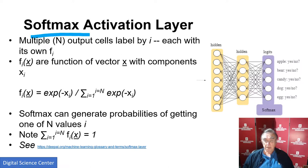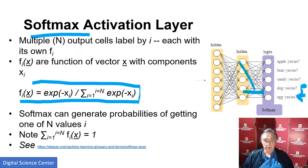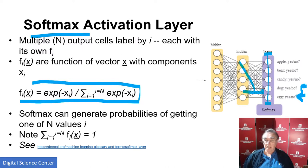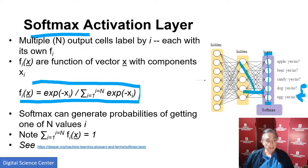Here we're trying to classify things — apple, bear, candy, dog, and egg as the outputs. In softmax, it converts all these things into probabilities. It forms e to the x over the sum of all of them, which means the sum of the outputs is always one — which is good if you're classifying, because you want it to be something. This tells you the probability for all these particular candidates — for example, 75% an apple, 25% a polar bear. That's softmax.